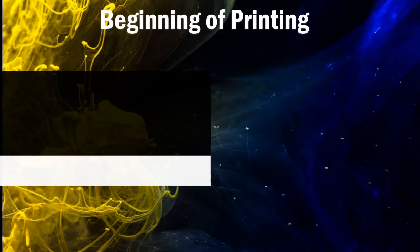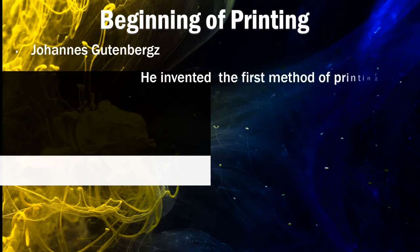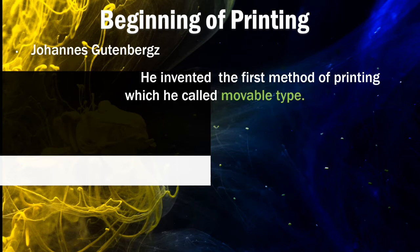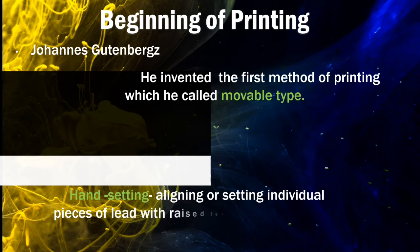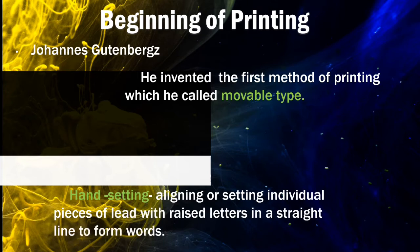In the beginning of printing, it was Johannes Gutenberg who invented the first method of printing, which he called movable type. Movable type printing was done by aligning or setting individual pieces of lead with raised letters in a straight line to form words. This method was known as hand setting.